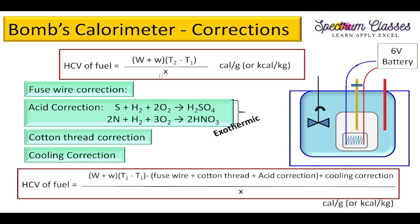The final corrected formula is: HCV = [(W + w) × ΔT − fuse wire correction − cotton thread correction − acid correction + cooling correction] / x. Note that all correction terms must be applied to the numerator before dividing by x — a common student mistake is dividing individual terms separately. The unit of HCV is calories per gram or kilocalories per gram. Once HCV is determined, LCV can also be calculated. I hope you found this video helpful — please like, share, and subscribe. Thank you for watching.